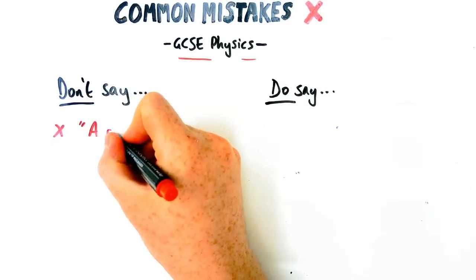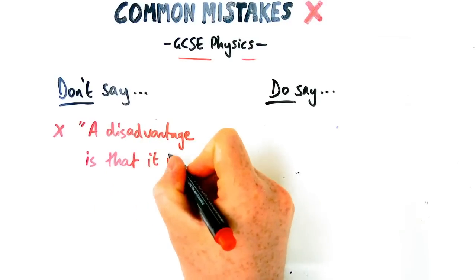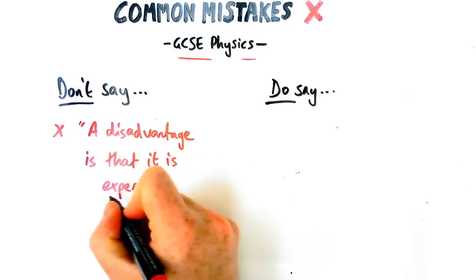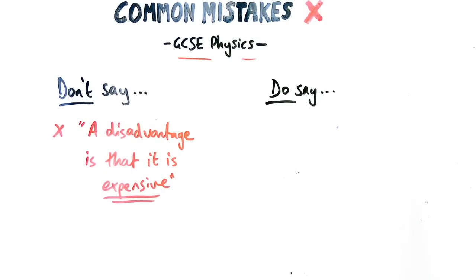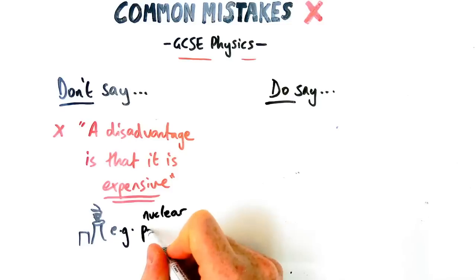The next thing which students, I think personally, you overuse a lot is when you're talking about disadvantages of something, in particular, let's say, energy generation, renewable energy, is that something is expensive. Now, it might not be wrong, but it's not specific enough really to get marks here.